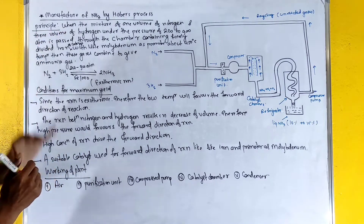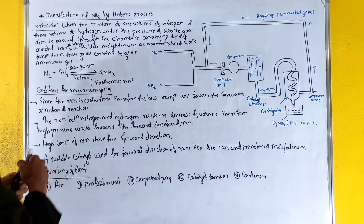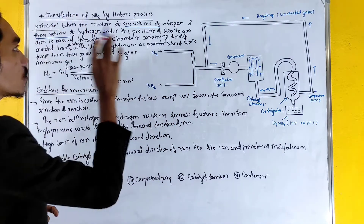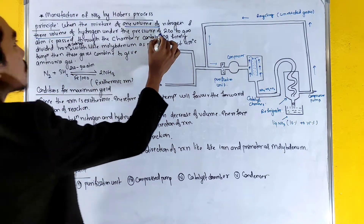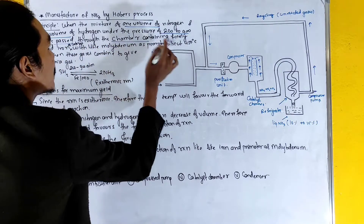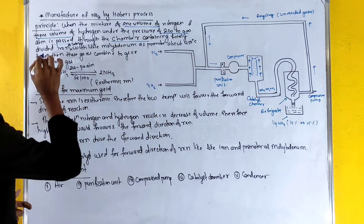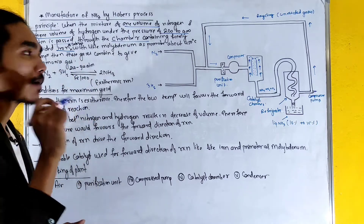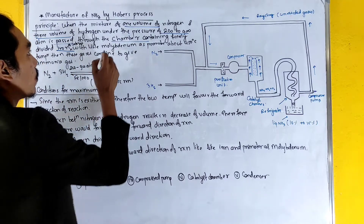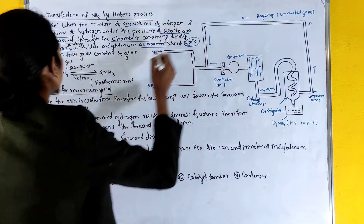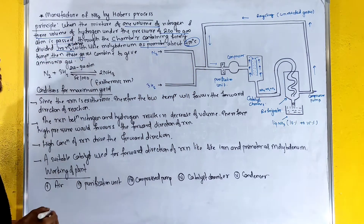In Haber's process, we are using nitrogen. When a mixture of one volume of nitrogen and three volumes of hydrogen, under a pressure of 200 to 900 atmospheres, is passed through a chamber containing finely divided iron as a catalyst.